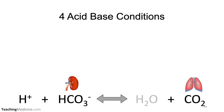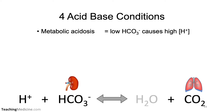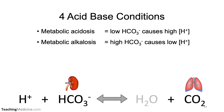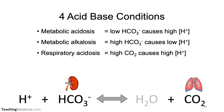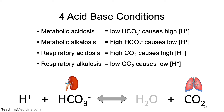There are four acid-base conditions that are very important to understand for acid-base assessment. Metabolic acidosis is when a low bicarb causes a high hydrogen ion concentration. Metabolic alkalosis is when a high bicarb level causes a low hydrogen ion concentration. Respiratory acidosis occurs when the carbon dioxide levels are high, causing a high hydrogen ion concentration. And respiratory alkalosis is a low carbon dioxide resulting in a low hydrogen ion concentration.